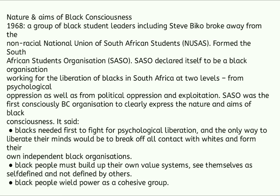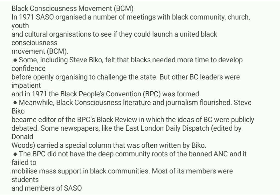SASO said blacks needed first to fight for psychological liberation, and the only way to liberate their minds would be to break off all contacts with whites and form their own independent black organizations. Black people must build up their own value systems, see themselves as self-defined and not defined by others, and wield power as a cohesive group. Those are the nature and aims of Black Consciousness. In 1971, SASO organized meetings with black community, church, youth, and cultural organizations to see if they could launch a united Black Consciousness Movement.